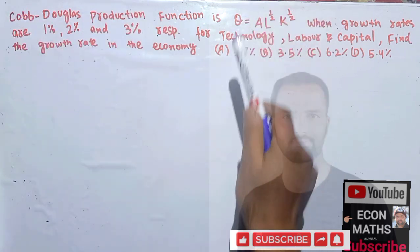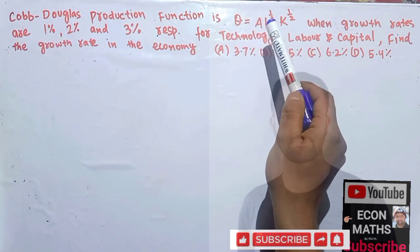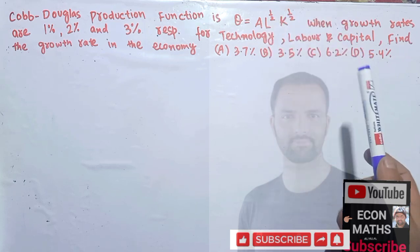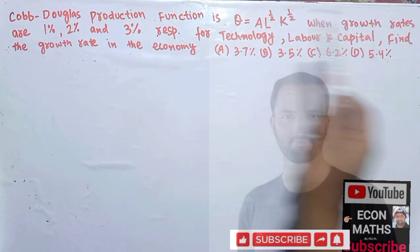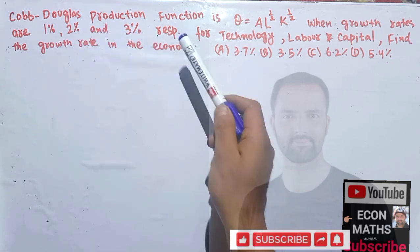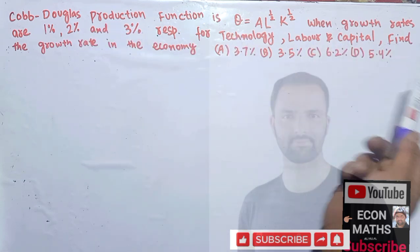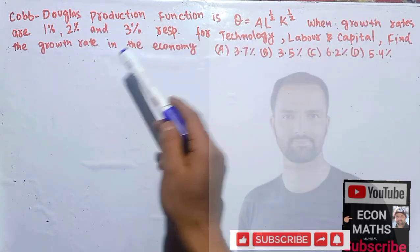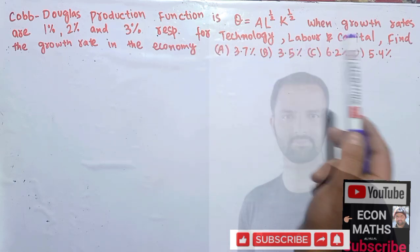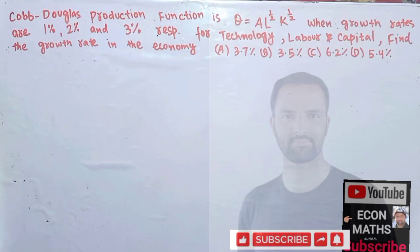The Cobb-Douglas production function is given as Q is equal to A into L to the power 1/2 into K to the power 1/2. When the growth rates are 1%, 2%, 3% respectively for technology, labor and capital, find the growth rate in the economy. The options are 3.7%, 3.5%, 6.2%, or 5.4%.